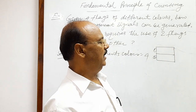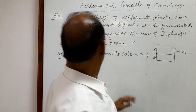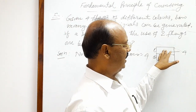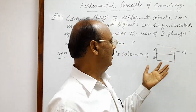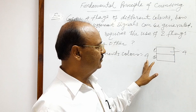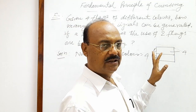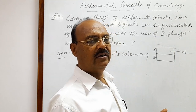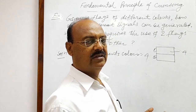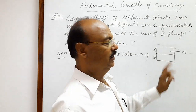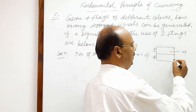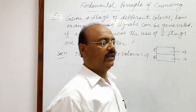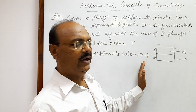This first flag can be taken in four different ways because we have four different colors. And once one color has been taken, we are left with three different colors, because out of four we have already used one color here. So any one of these three remaining colors can be used for the second flag, meaning the second flag can be formed in three different ways.